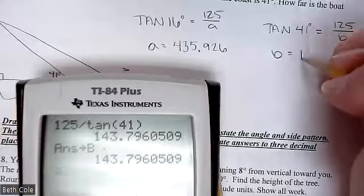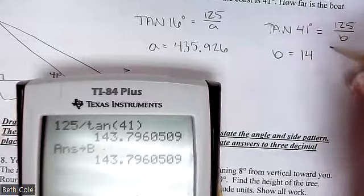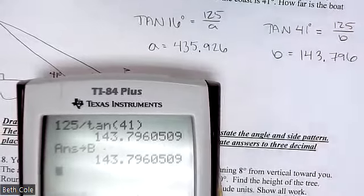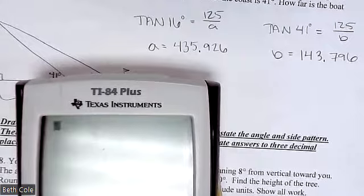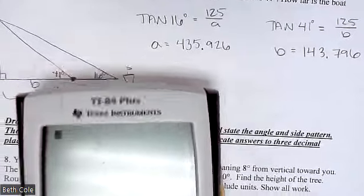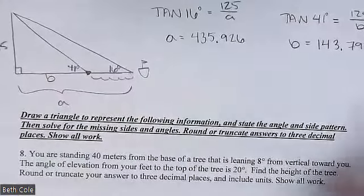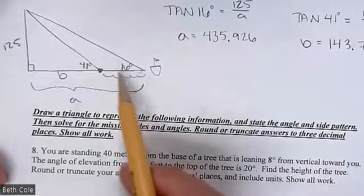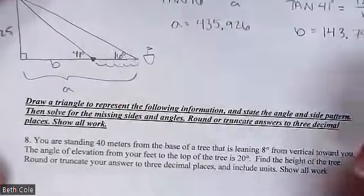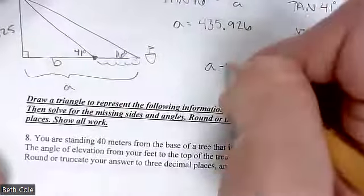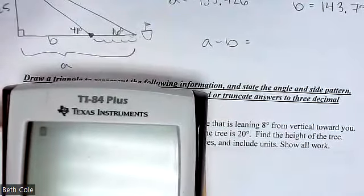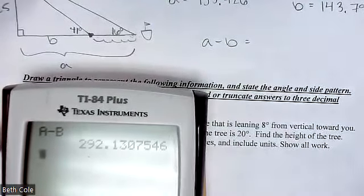Did anyone else get 143.7? Once you store it, clear it out. Now you either add or subtract to get the water distance between the coast and the boat. It's A minus B — type alpha A minus alpha B — and that's the final answer in feet.